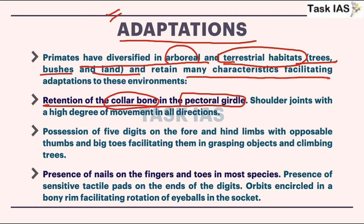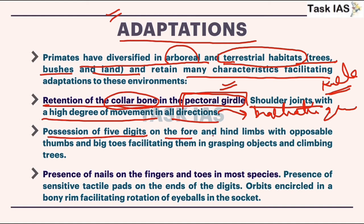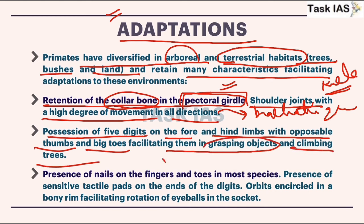The collar bone is a bone present in the shoulder. The shoulder joint has a high degree of movement in all directions. This flexible collar bone provides scope for movement in all different directions, enabling brachiation on trees as well as quadrupedalism and knuckle walking on land. They also possess five digits on the fore and hind limbs with opposable thumbs and big toes, facilitating grasping of objects and climbing trees.